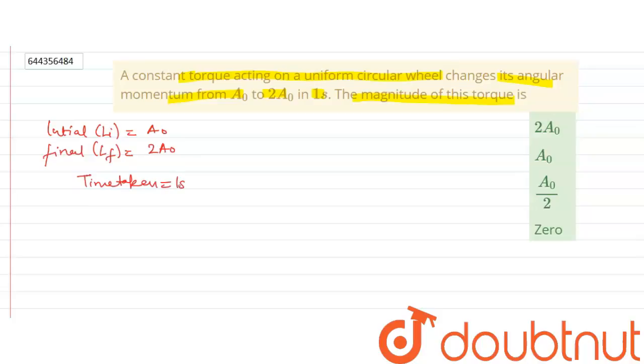Now time taken is T0 which is T2 minus T1, which is equal to one second. Now we know that T0 is equal to R cross F.